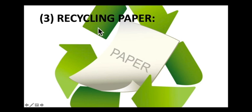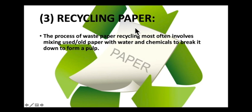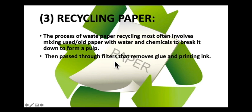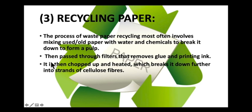Now we are going to discuss recycling paper. Paper is actually made of cellulose fibres from plants, usually trees. The process of waste paper recycling most often involves mixing old paper with water and chemicals to break it down and form a pulp. It then passes through filters that remove glue - for example, the glue used to hold together the pages of magazines - and then it is treated to remove printing ink. After that it is chopped up and heated, which breaks it down further into strands of cellulose fibre.